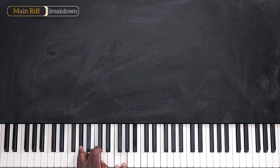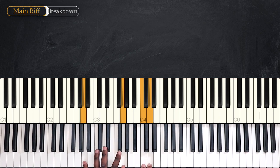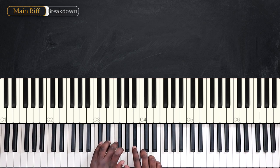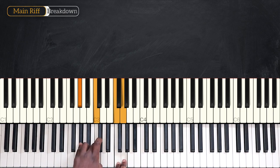So to recap: Eb major 7 at 6, A minor 7 at 11, Db major 7 at 6, and Ab major 7 at 6. Here's the playing pattern.